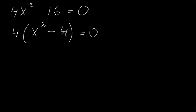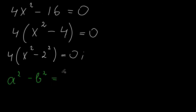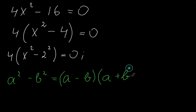4 is basically 2 times 2, so 2². We can write this equation as 4 times (x² minus 2²) equals zero. We have a formula for this: a² minus b² equals (a minus b)(a plus b), where a and b are any real numbers.